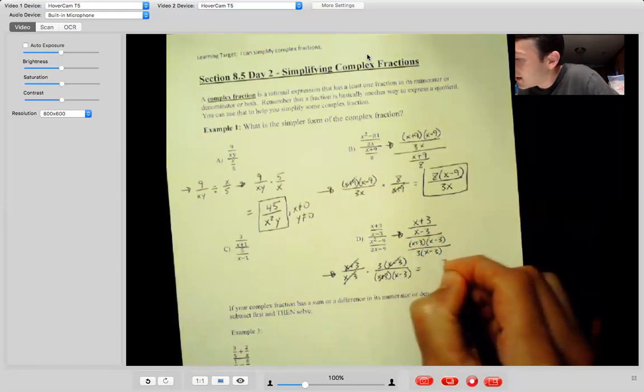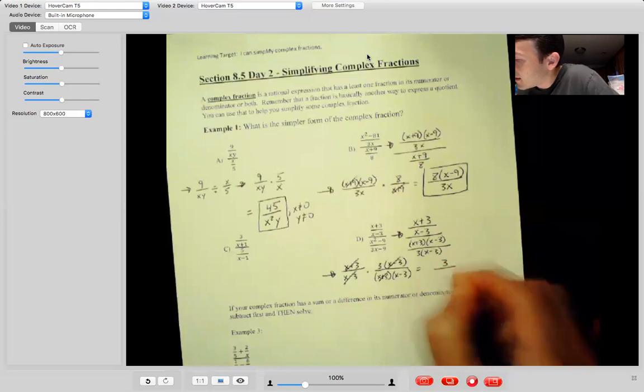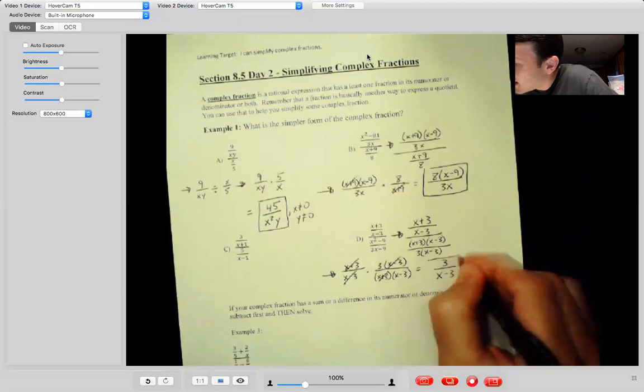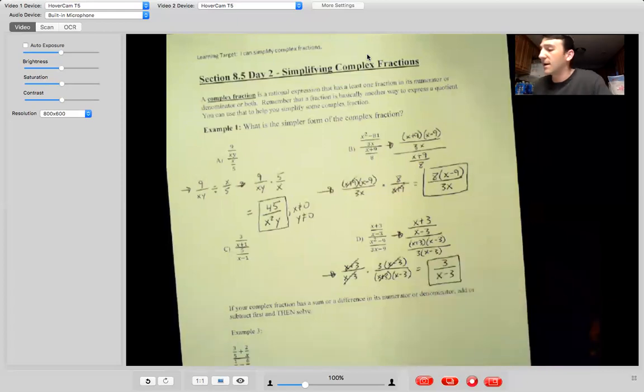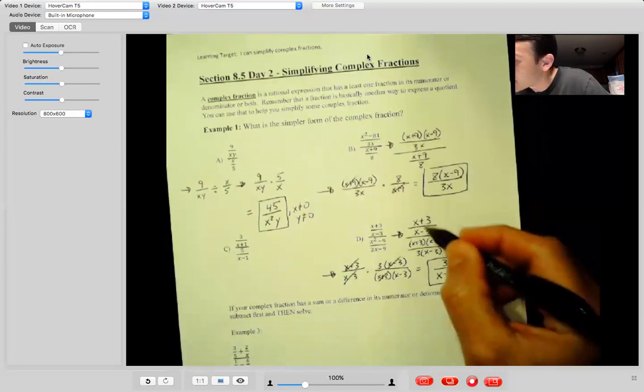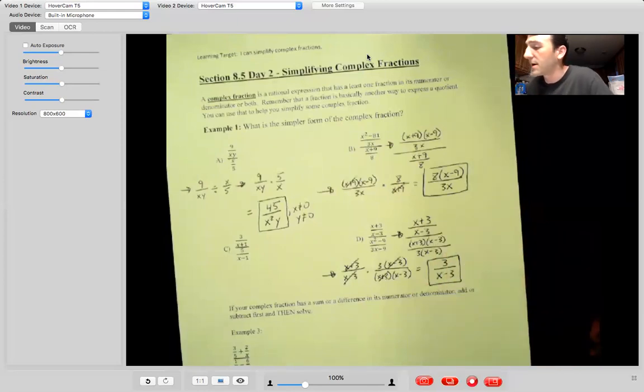So that's going to give me three over X minus three. And my only restriction would be that, well, actually I would have, remember everything under here would be a restriction. So X can be plus or minus three.